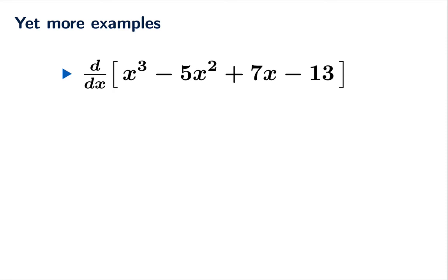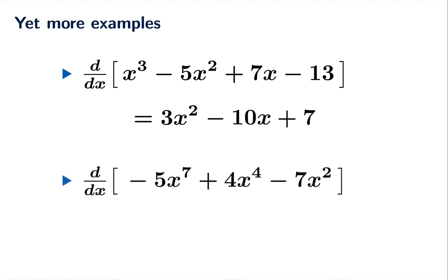But let's be even more efficient. 3x squared, you can imagine bringing the exponent out and then multiplying immediately by the coefficient, so the 2 is going to pop out, that's negative 10x plus 7. How about the derivative of this seventh degree polynomial? The 7 is going to come out of the exponent. Negative 7 times 5 is 35, it's going to be negative 35x to the sixth, plus the 4 pops out, 4 times 4x to the third, so that's 16x cubed minus 14x.